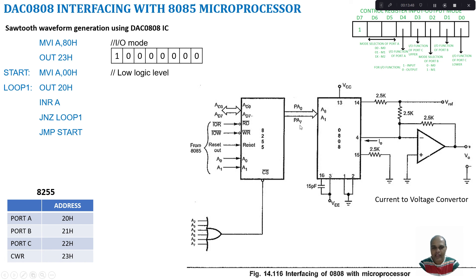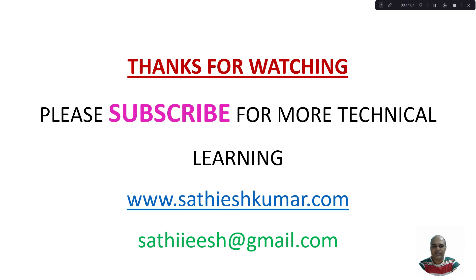In this tutorial, I have discussed how to interface a DAC 0808, an 8-bit digital-to-analog converter, with the 8085 microprocessor. I also discussed simple programming to generate a square wave and a sawtooth waveform using the DAC 0808 IC. Thanks for watching. Please subscribe for more technical learning.